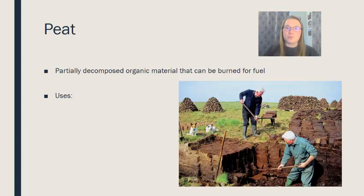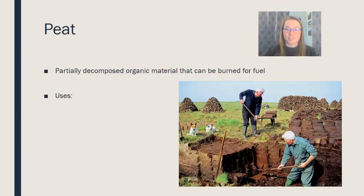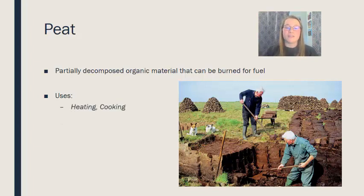The second type of fuel is peat. Peat is a partially decomposed organic material often found in peat bogs. It can be used very similarly to wood — primarily for heating and cooking.